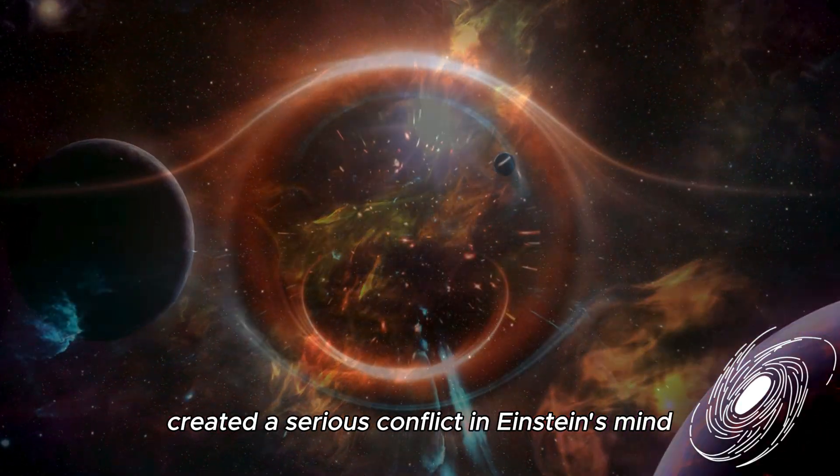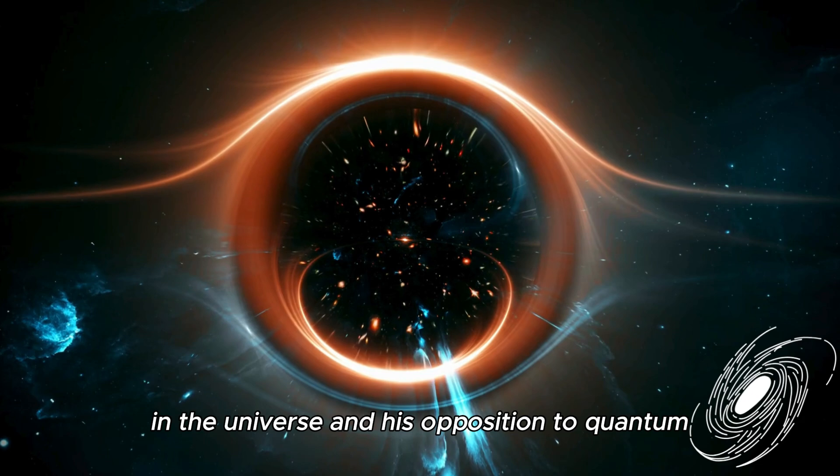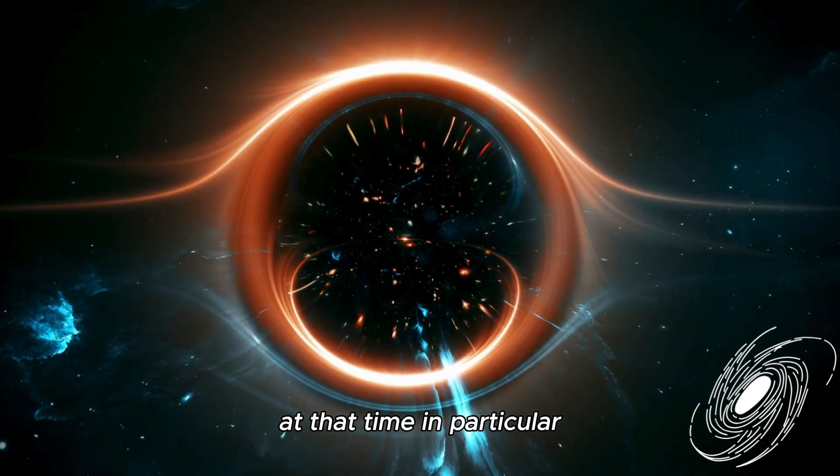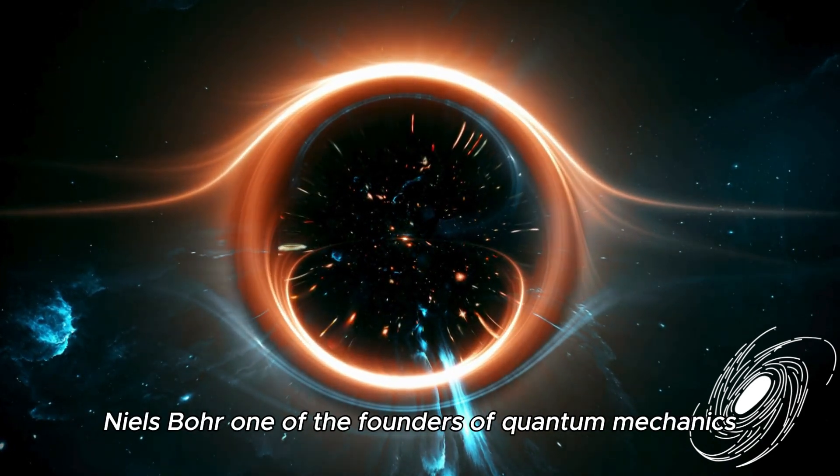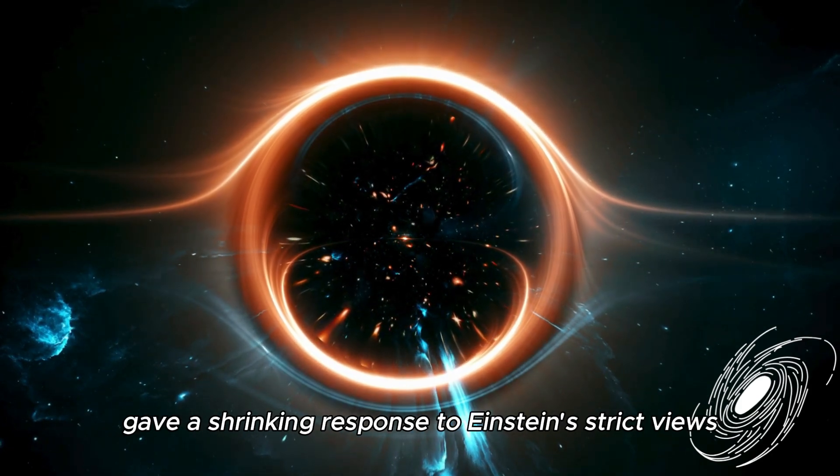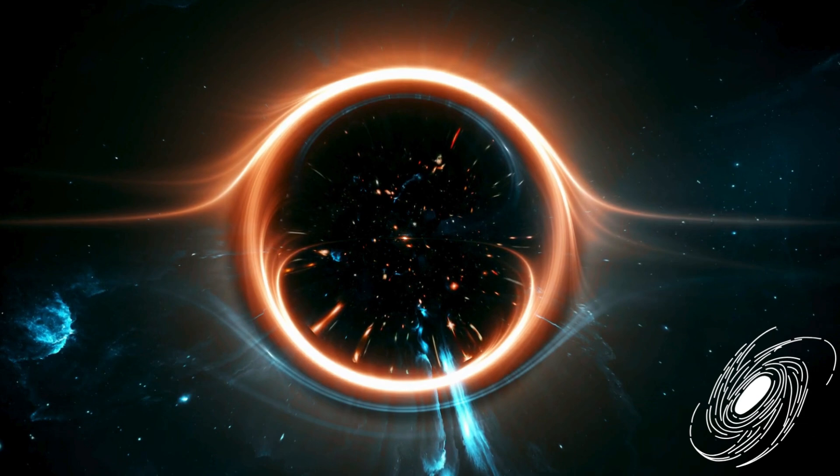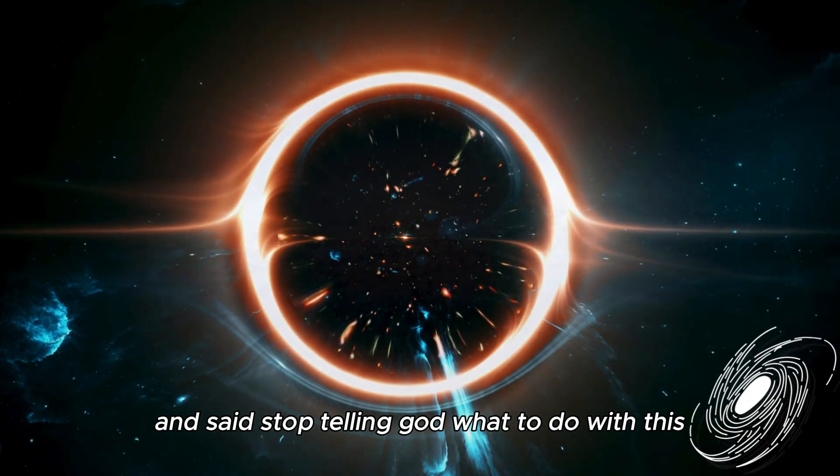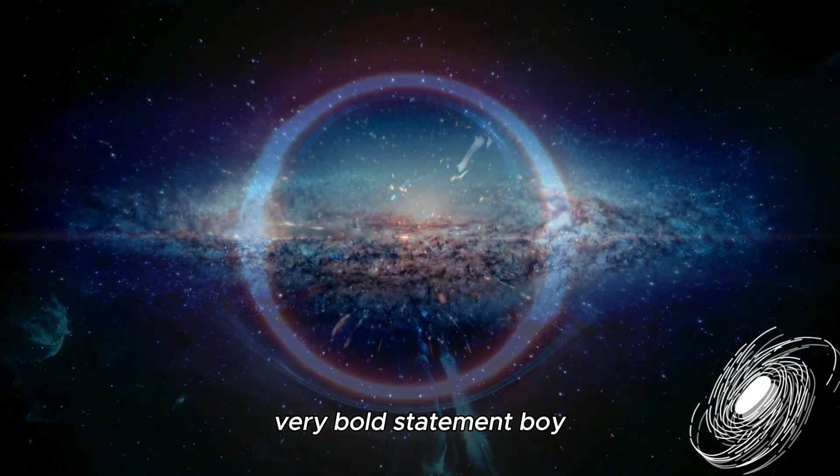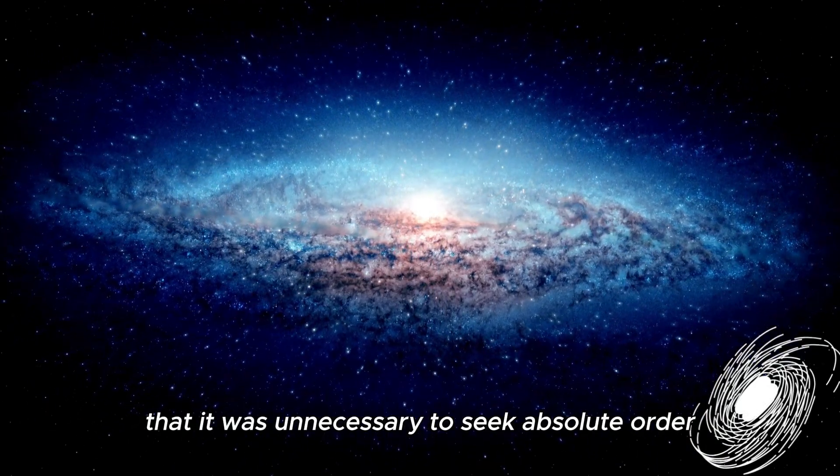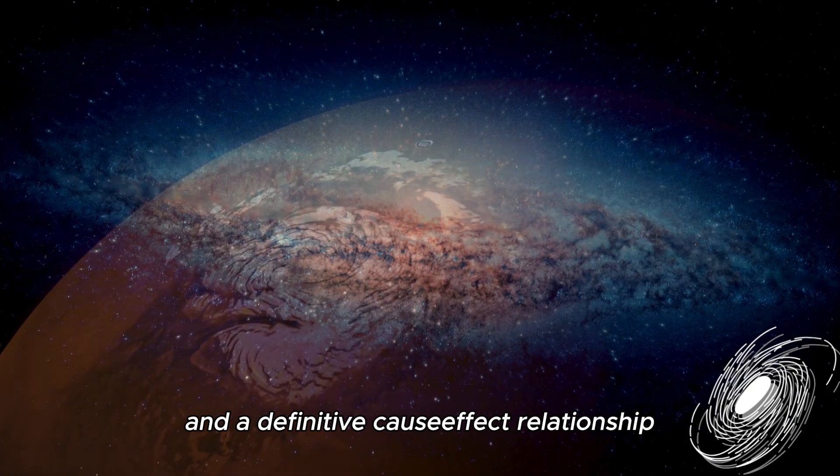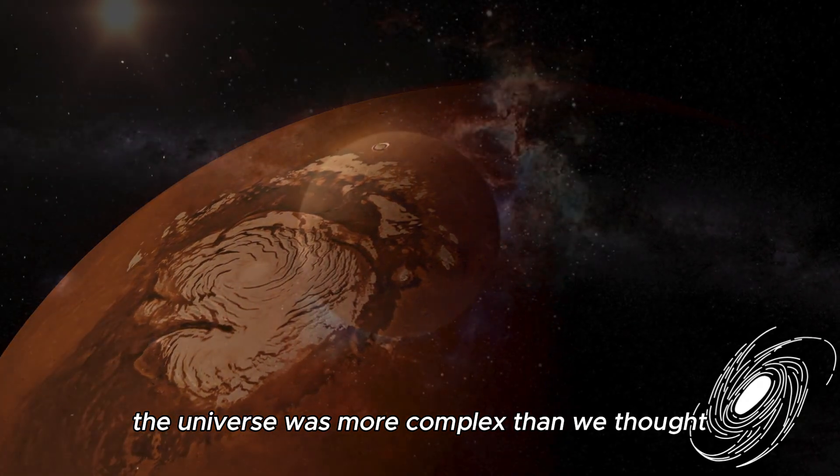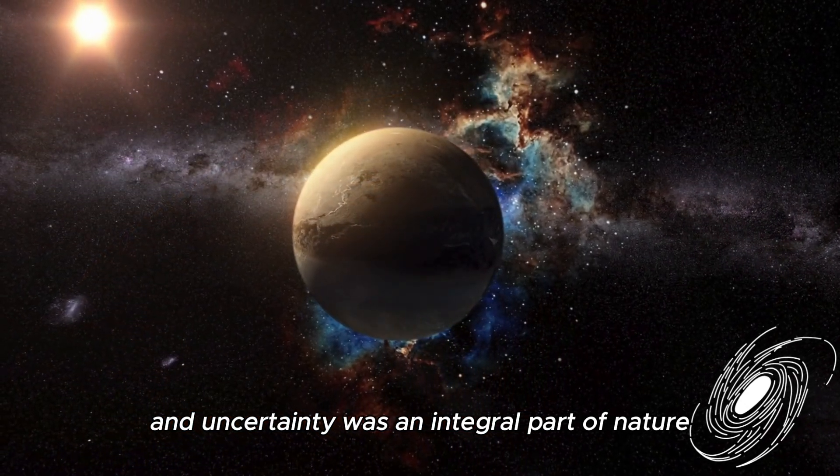Einstein's search for order in the universe and his opposition to quantum mechanics drew strong opposition from many scientists at that time. In particular, Niels Bohr, one of the founders of quantum mechanics, gave a striking response to Einstein's strict views. Bohr criticized Einstein's insistence on how the laws of nature worked and said, 'Stop telling God what to do.' With this very bold statement, Bohr emphasized that it was unnecessary to seek absolute order and a definitive cause-effect relationship in the functioning of the quantum world. According to him, the universe was more complex than we thought and uncertainty was an integral part of nature.